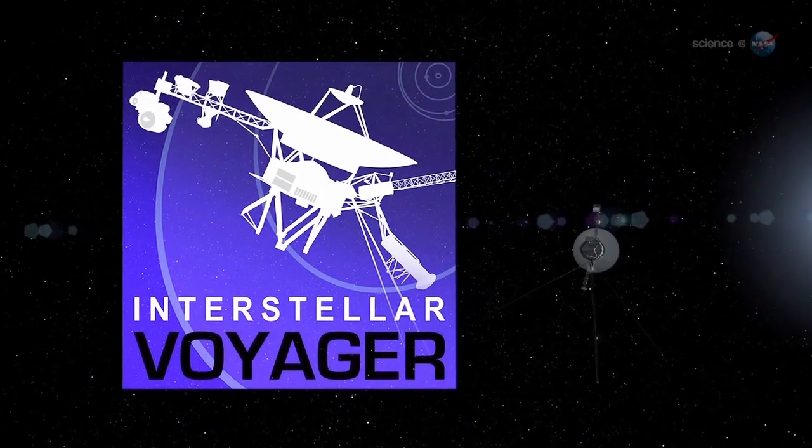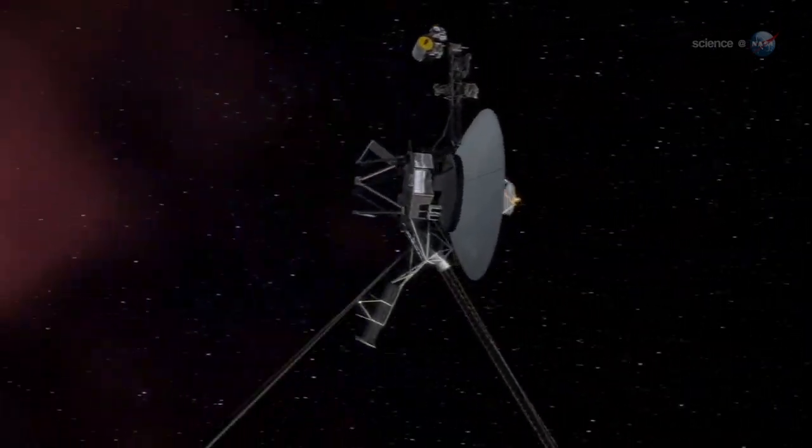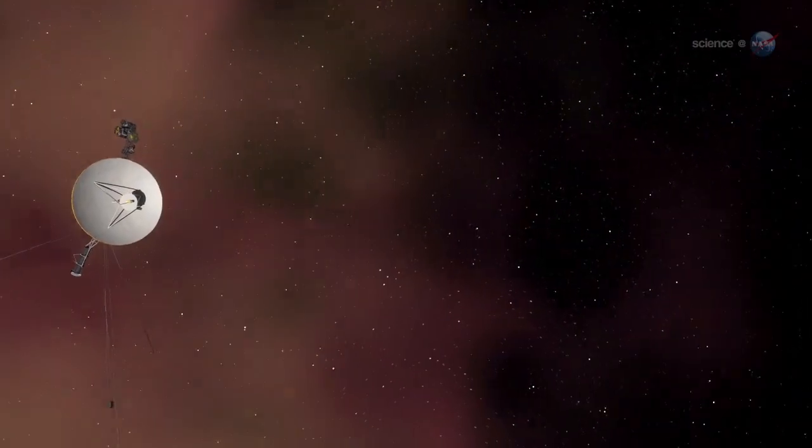When NASA sent the Voyager probes to find the edge of the Sun's magnetic field, it took them nearly 40 years to get there. Turns out, that's nothing.